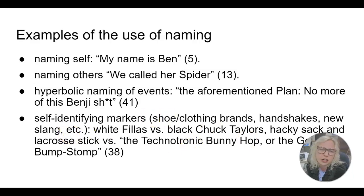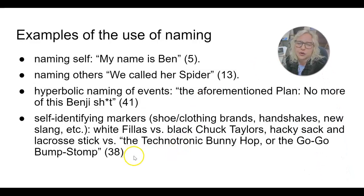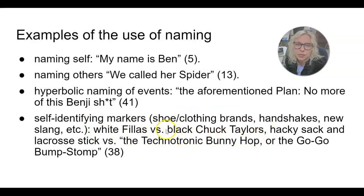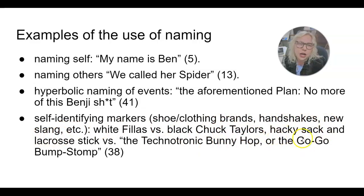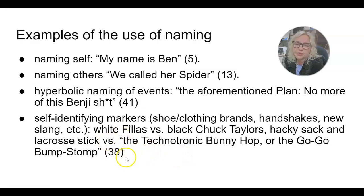The self-identifying markers are really fun in this book. Watch for them. Reggie has white feelers he's obsessed about keeping white, while Benji has black Chuck Taylors — Converse shoes. He also talks about the handshakes, new slang, et cetera — what he learns in his predominantly white school, like hacky sack and lacrosse, versus what he has to learn from NP to get caught up on black culture: the technotronic bunny hop or the go-go bump stop, both of which I cannot find after Googling, so maybe you can help with some research on those.